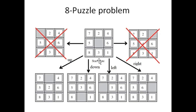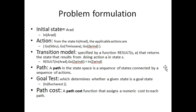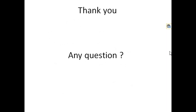We also discussed the map of Romania: moving from Arad to Bucharest, the problem formulation, and how to write it in a specific formal form. We then converted this problem into the form of a tree. Hopefully you enjoyed this lecture. If you have any questions, you can send me an email and I will reply. Thank you.